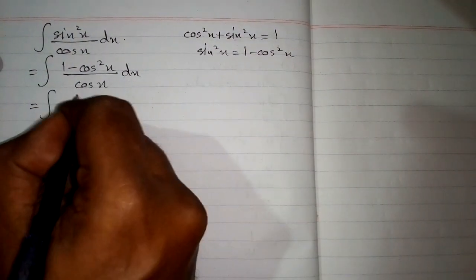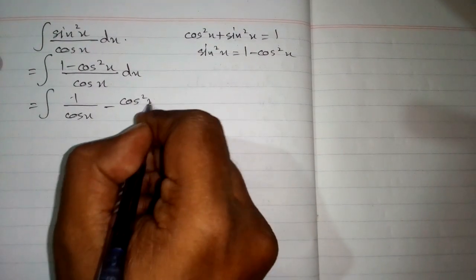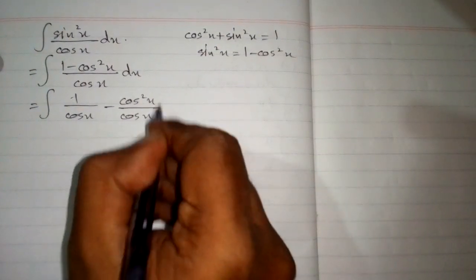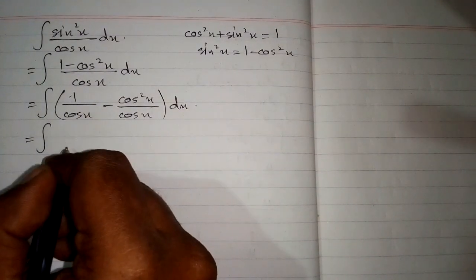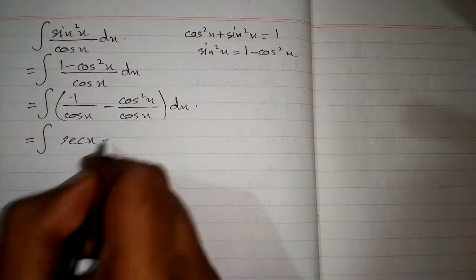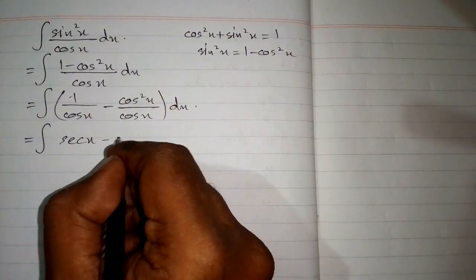Now the above fraction can be written as 1/cos x minus cos²x/cos x. And 1/cos x is sec x, and we can cancel cos x, so we have cos x remaining.